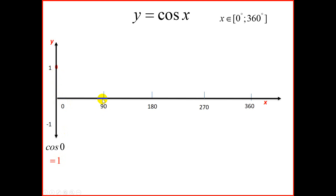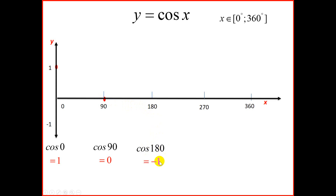Then we're going to go to 90 and type cos 90. On our calculators cos 90 is 0, so at 90 we're going to place a point. Then we're going to 180 degrees — type cos 180 on your calculator and you should get negative 1. So at 180 and at the point negative 1 we'll have our next point.